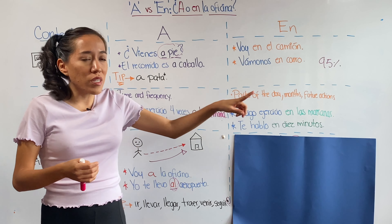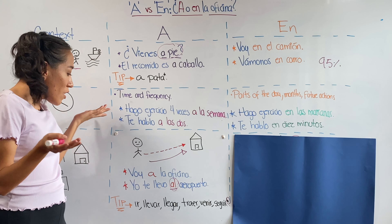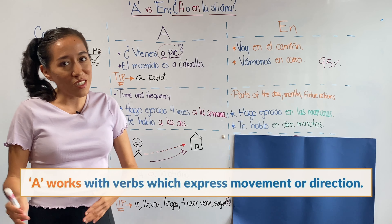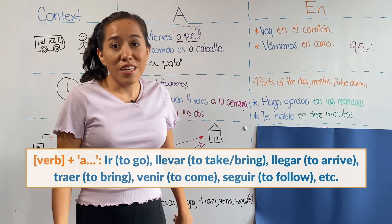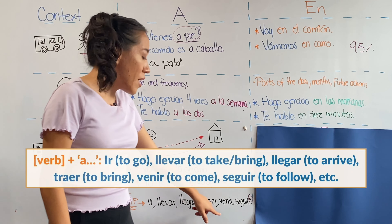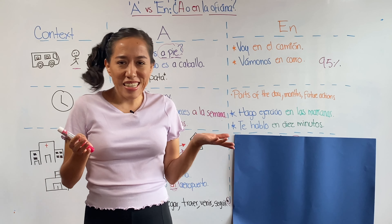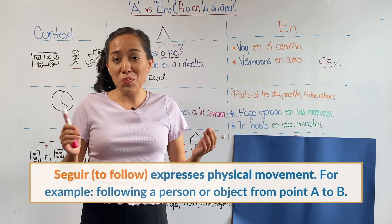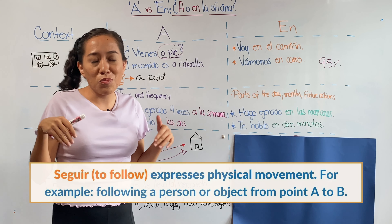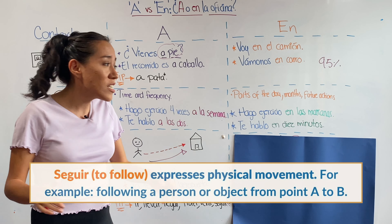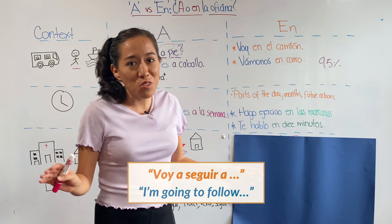Since a expresses movement or direction, it's going to work with a very specific set of verbs — those that also express movement or direction. For example: ir (to go), llevar (to take), llegar (to arrive), traer (to bring), venir (to come), and seguir (to follow). Many students say seguir doesn't express movement, but it does — suppose you're following someone from point A to point B, wherever they go. Voy a seguir a... someone.